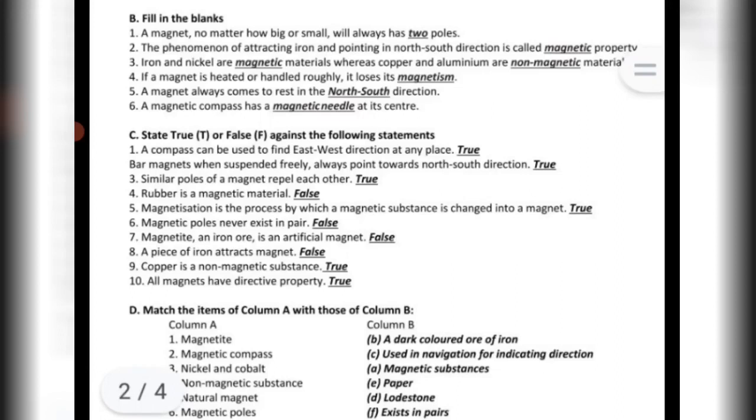Magnetization is a process by which a magnetic substance is changed into a magnet. True. Magnetic poles never exist in pair. False.